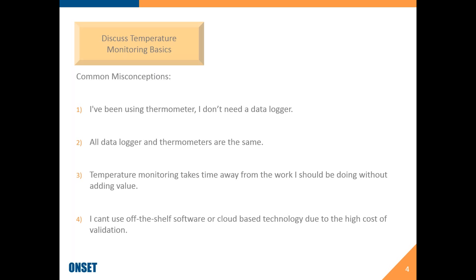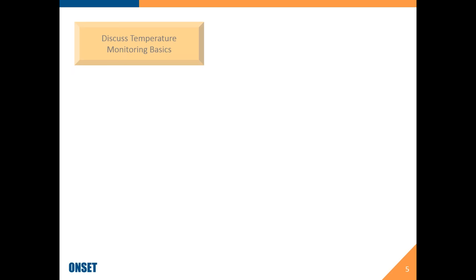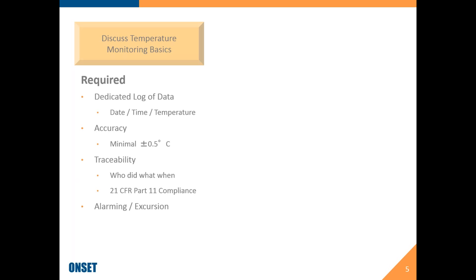Moving on to the basics of data loggers — these are things you'll see across the board with any data logger company. Data loggers have one core tenant: they provide you with a date, time, and temperature of the information you're recording. This is the biggest difference between a data logger and a thermometer. A thermometer gives you a spot temperature and maybe a minimum and maximum, but digital data loggers give you the ability to see what happens and trends over time — especially valuable if you have products or test samples susceptible to temperature damage, or if you need to provide data for FDA filings or clinical trial sites.